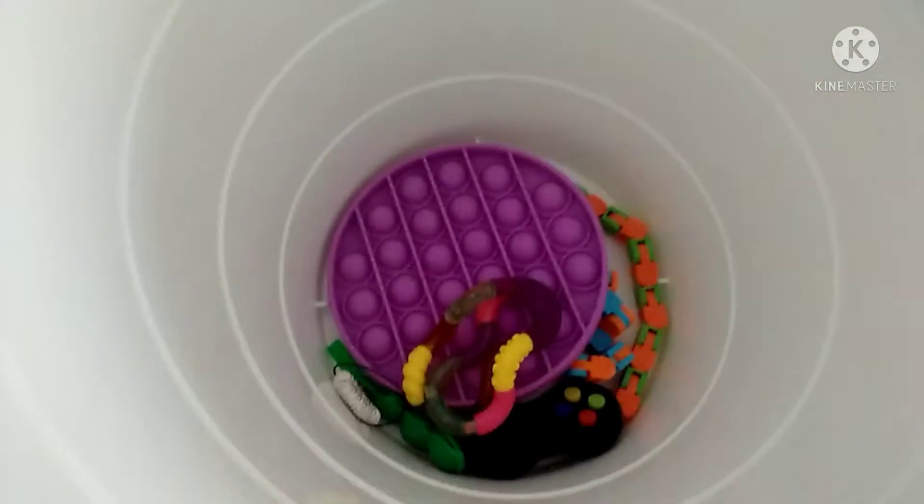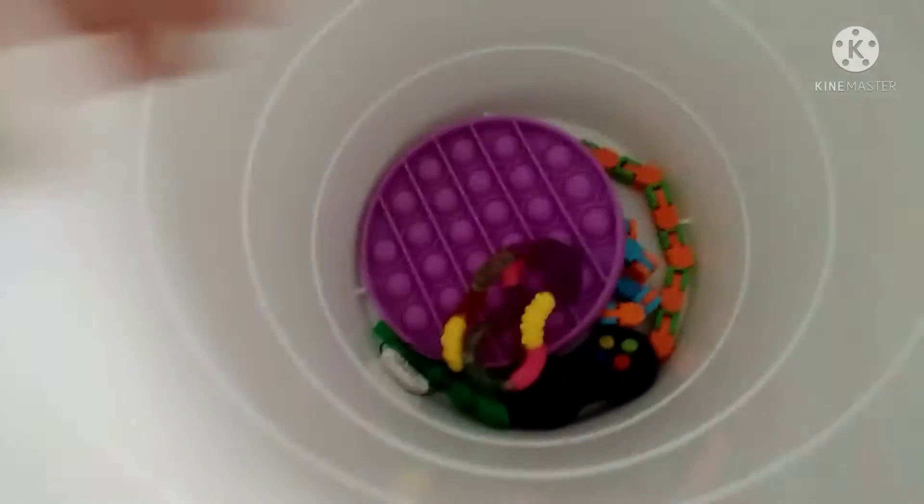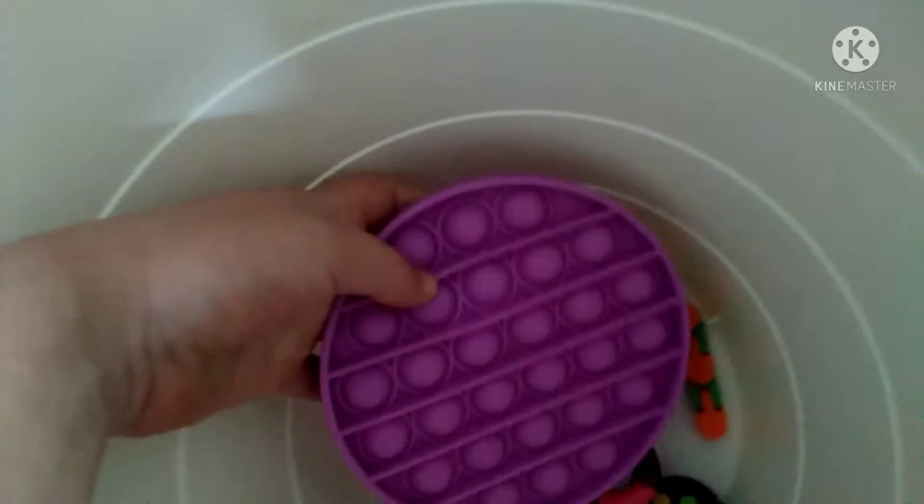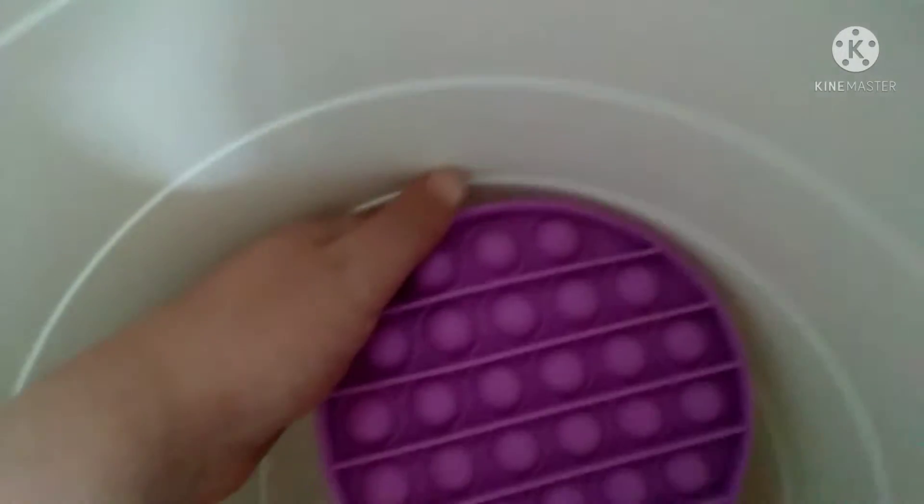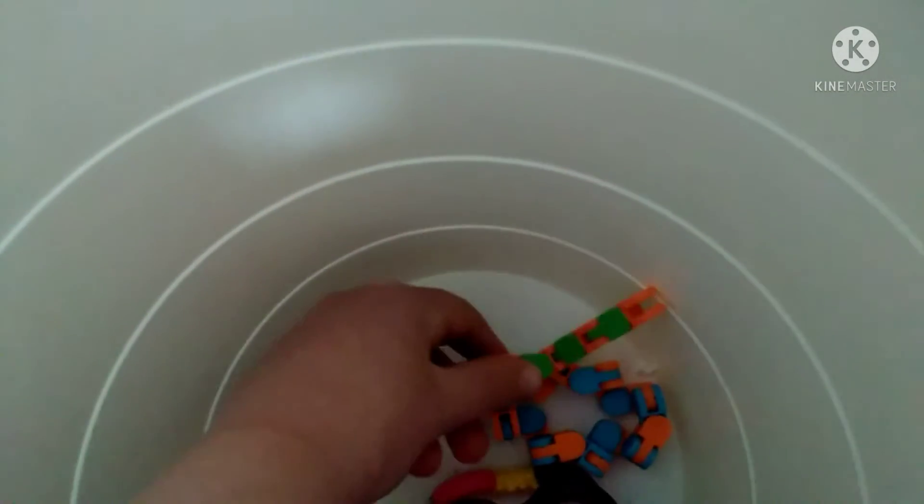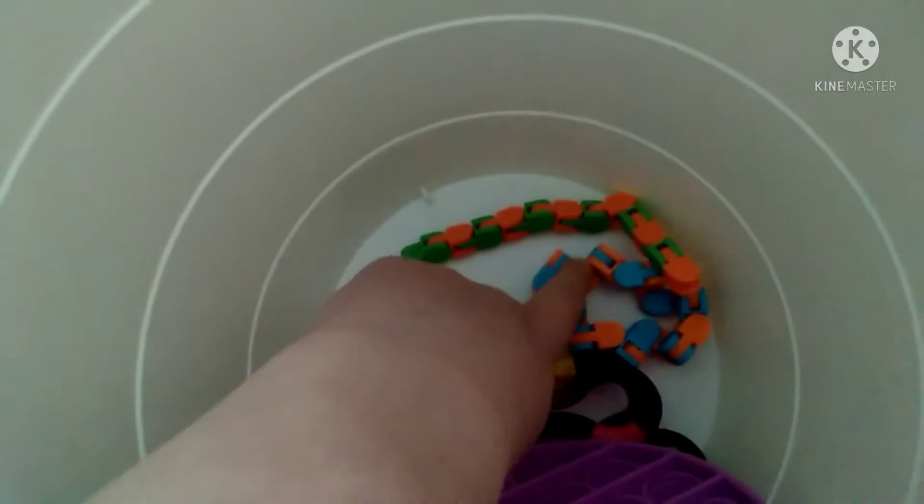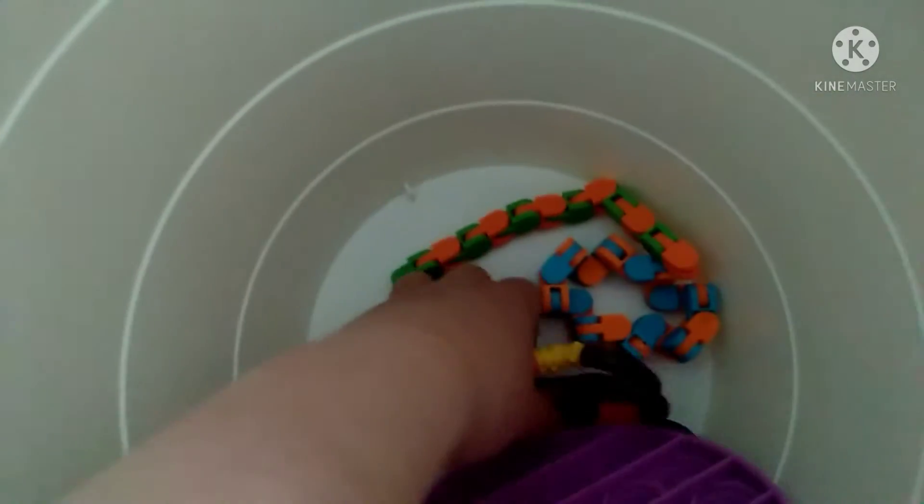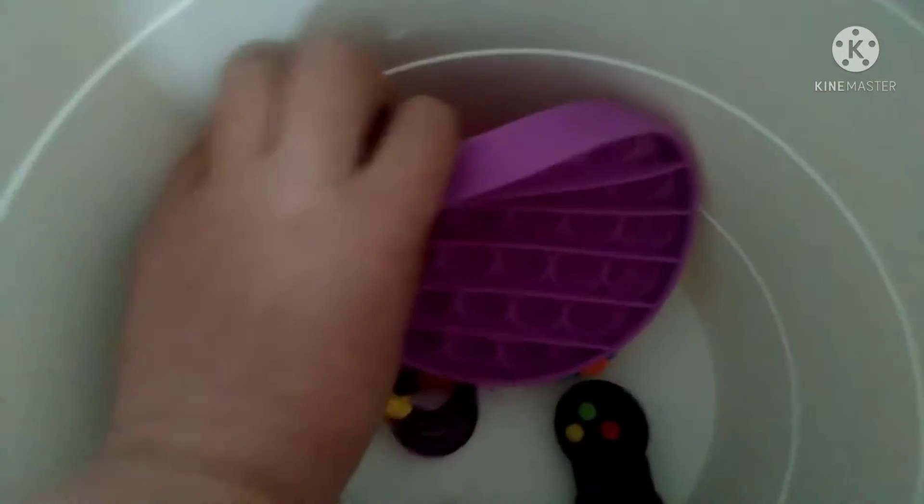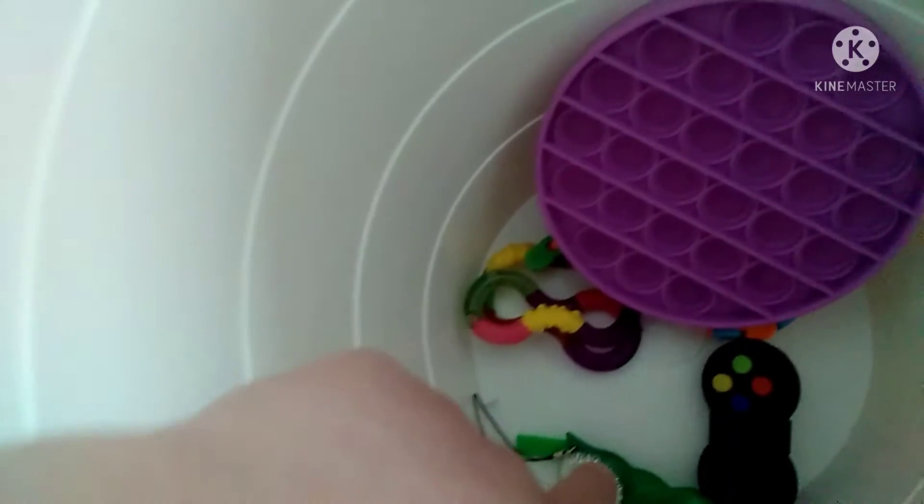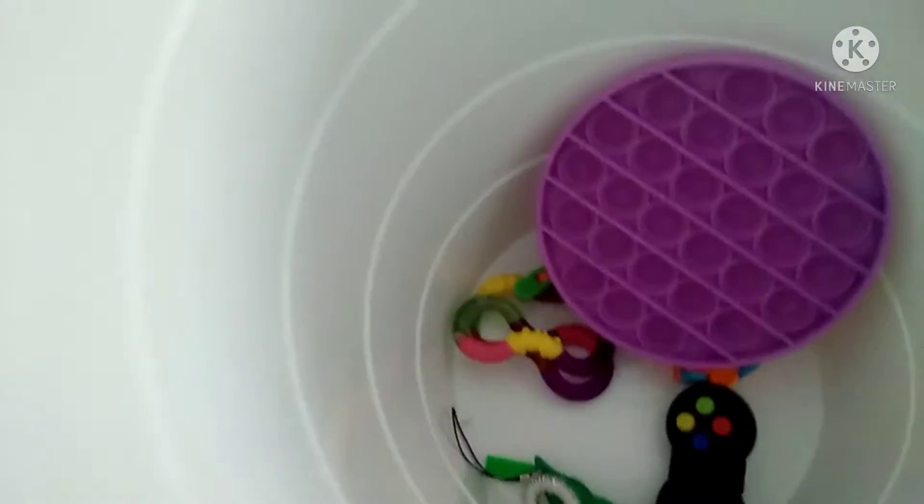So I packed some fidgets to take to the trading hub. First of all, this sort of magenta-colored circle pop it. Then these two wacky guys, because they're actually part of the wacky track. And I made this into a DIY snapper. And a popper, an anxiety ring, plus a fidget pad.